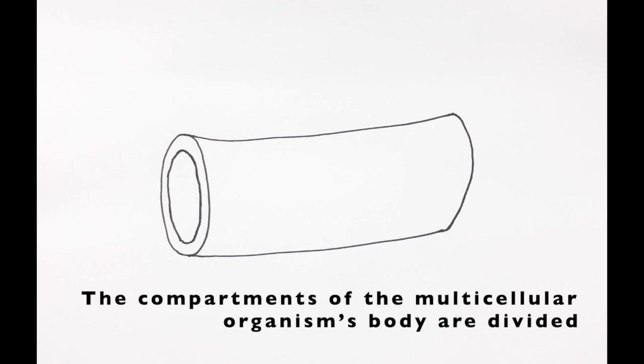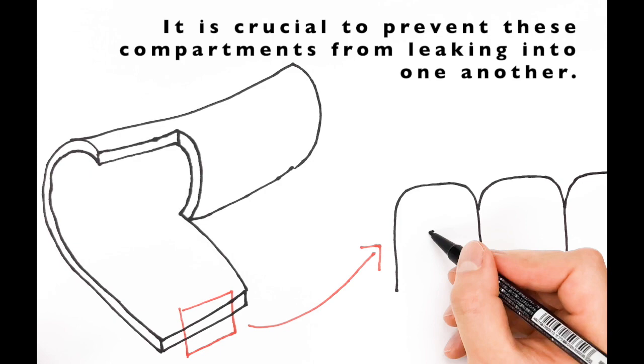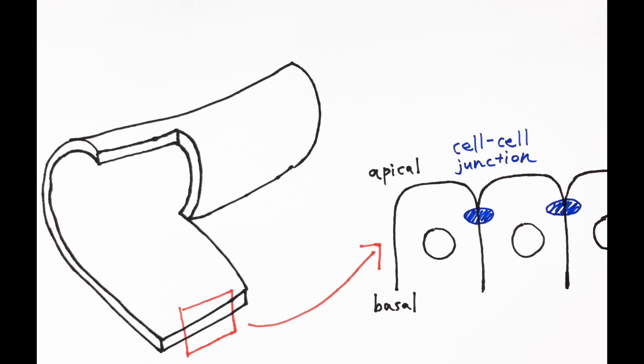The compartments of the multicellular organism's body are divided by epithelial sheets to maintain the tissue environment. It is crucial to prevent these compartments from leaking into one another. The tight sheet provided by epithelial sheets depends upon tight junctions.